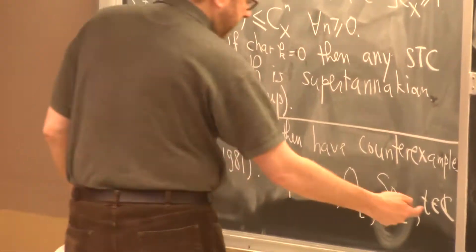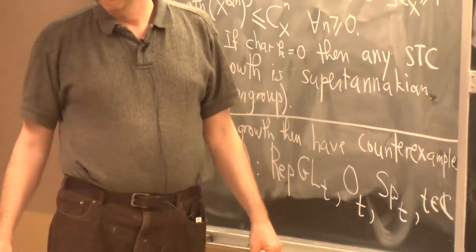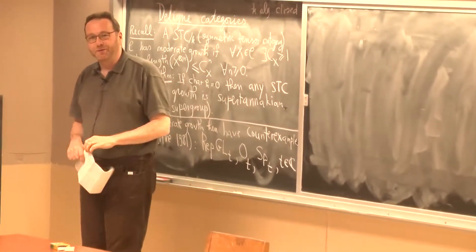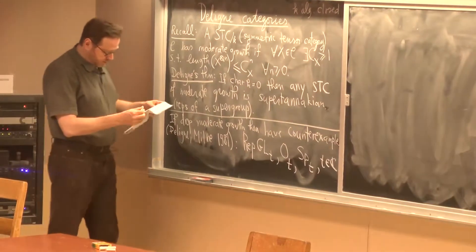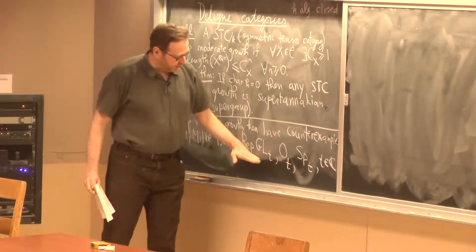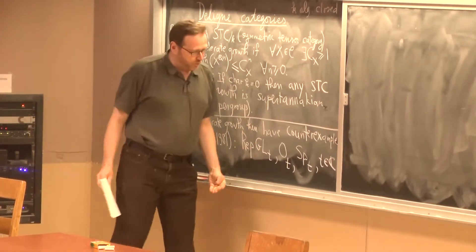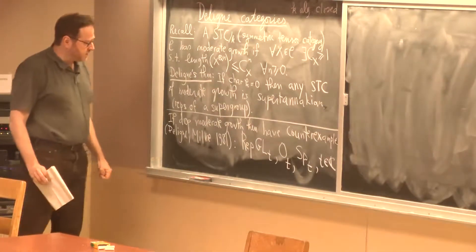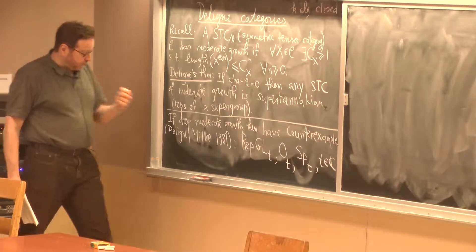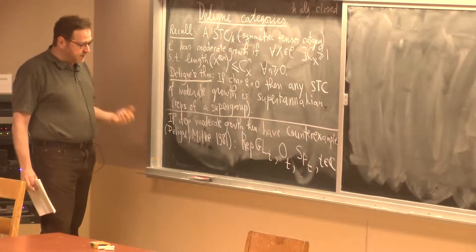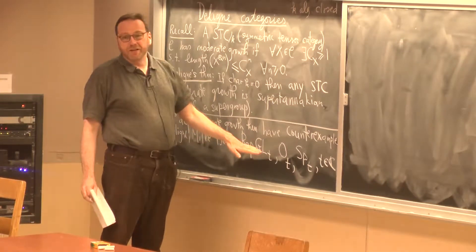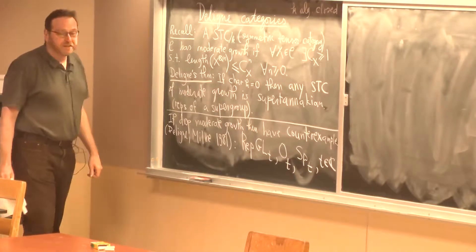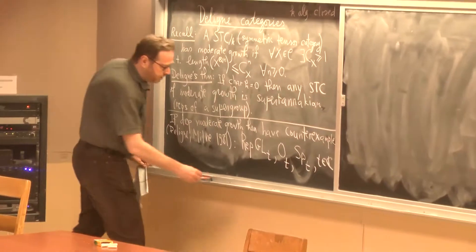The examples are representations of GL(T), or of O(T) and Sp(T) — classical groups — when T is an arbitrary complex number. These examples are over C or any field of characteristic zero, and they are obtained by interpolating the representation theory of classical algebraic groups to the case when T, the dimension of the vector space, is not an integer.